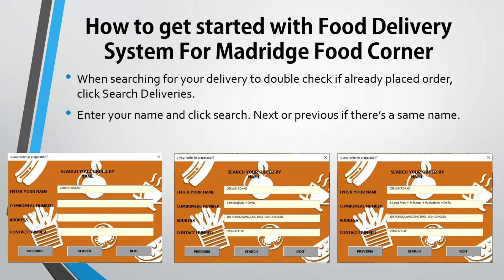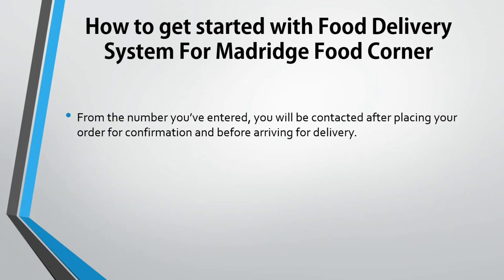For searching your delivery to double-check if you've already placed an order, click Search Deliveries. Enter your name and click Search, then use Next or Previous if there are multiple orders with the same name. From the number you've entered, you will be contacted after placing your order for confirmation and before arrival for delivery.